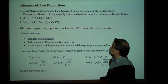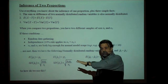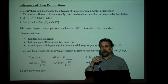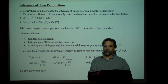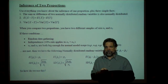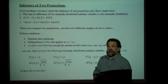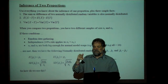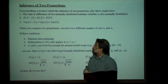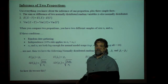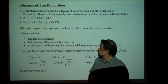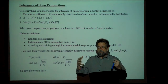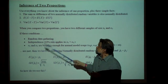Now let's take a look at the inference of two proportions. We're going to use everything we know about inference of one proportion, and we use three more facts. Fact one: the sum or difference of two normally distributed random variables is itself a normally distributed random variable. Fact two: the expected value of the difference of random variables is the difference of the expected values — the mean of the difference is the difference of the means. Fact three: the variance of the difference is the sum of the variances, so the difference takes on more variability.